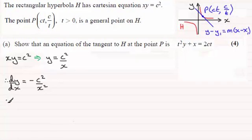So to get that gradient at P we just take when x is equal to ct. And when x equals ct we therefore have that the gradient dy dx is going to be equal to minus c squared divided by x squared which is now c squared t squared. Those c squares cancel and we're just left with that equaling minus 1 over t squared.